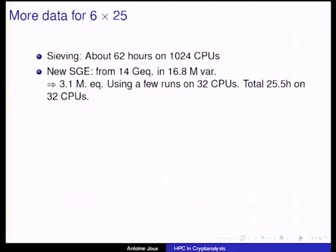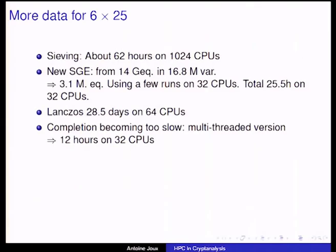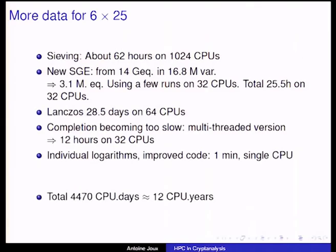As Vanessa said this morning: sieving was easy — 62 hours, about two and a half days on 1000 CPUs. We got 14 billion equations in 16 million variables, reduced to 3 million after structured Gaussian elimination — a five-fold improvement. That took about a day, though we had to run it several times to adjust strange parameters by dichotomy search. Lanczos was a full month — a real pain. Total: 12 CPU years.